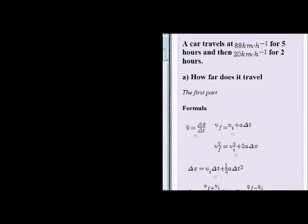Okay, so here we go with another example. This example tells us that a car travels at 88 kilometers per hour for five hours and then 20 kilometers per hour for two hours.